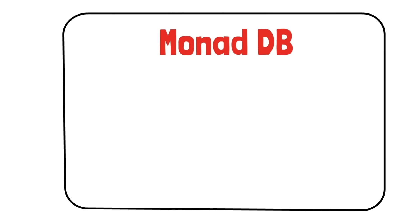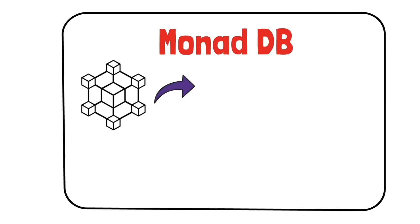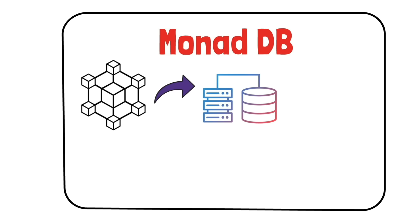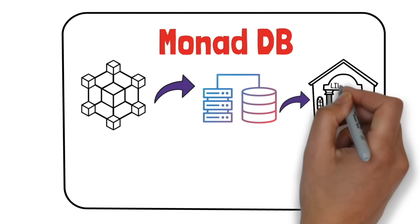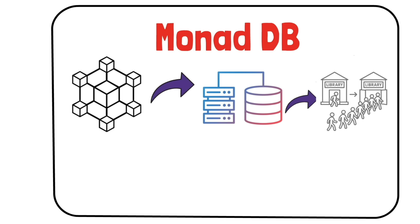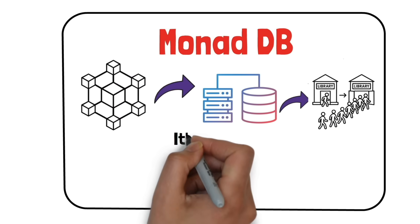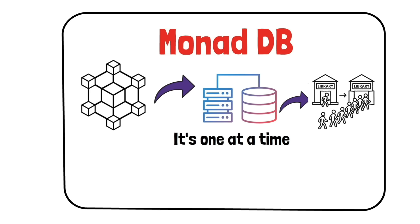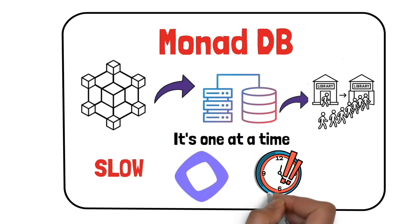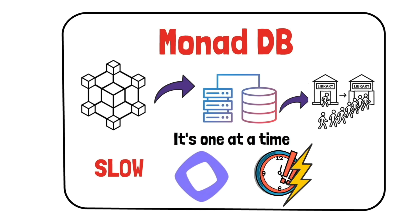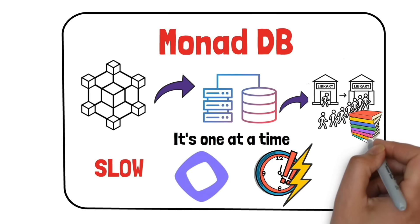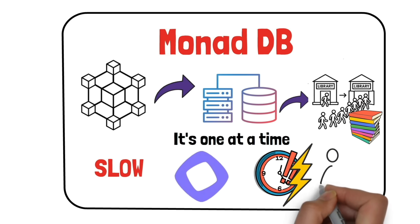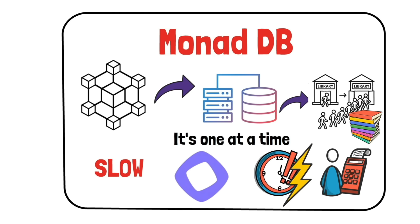And fourth, Monad DB. Blockchains need to read and write massive amounts of data in a database. You can think of the database like a library. The way a lot of databases work currently is like letting one person into the library at a time — they find their book, check it out, then leave, and only then can the next person go in. Monad built its own custom storage system, Monad DB, made just for the unique needs of high-speed blockchains. This is like a library where everyone can search for their books all at the same time — much faster, cheaper, and more efficient. Monad DB handles data more efficiently, which speeds up every app and every transaction.